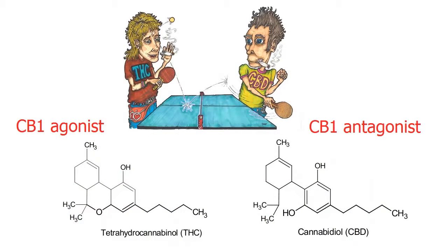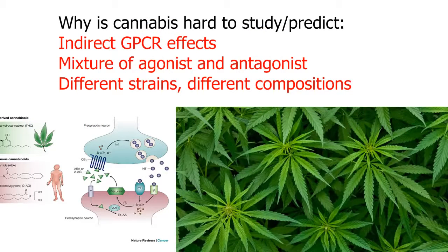The other major cannabinoid found in cannabis is CBD, which blocks the receptors without producing a signal to the cell. That means it's an antagonist — it opposes the actions of agonists like THC. It also has no detectable psychoactive effects. The mixture of agonist and antagonist, combined with the nature of cannabinoid signaling as a modifier of other signals, means that the health effects of cannabis are hard to study, somewhat unpredictable, and paradoxical from one situation to the next.